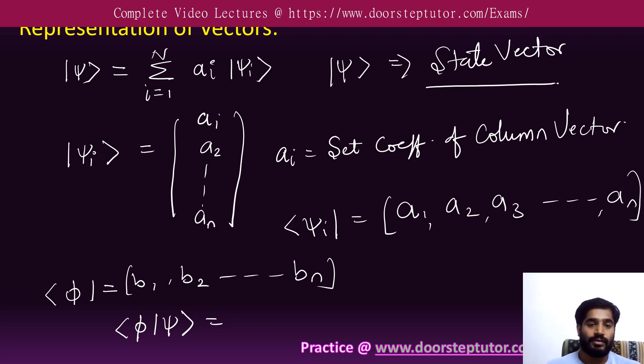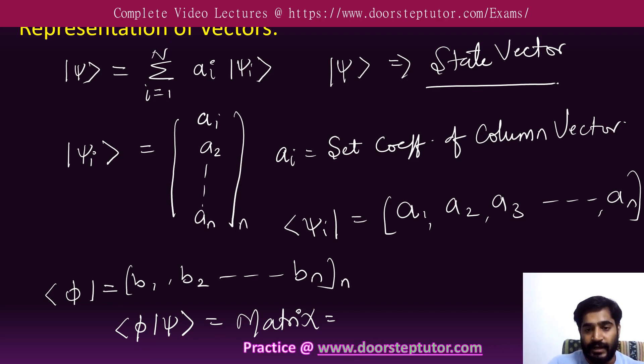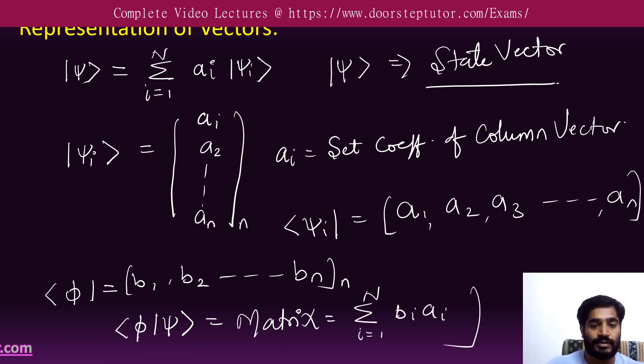If I want to find bra psi ket phi, then it's going to be simply a matrix combination. If you multiply this column into a row which has n order, n cross n order, that is going to be summation from i=1 to n of bi times ai. This is the bra of psi and ket of phi.